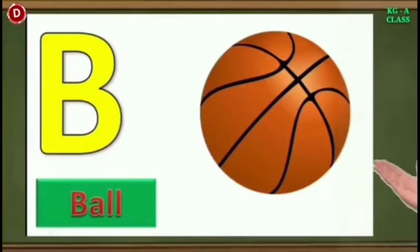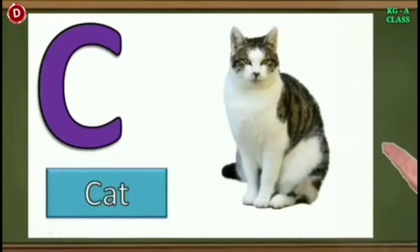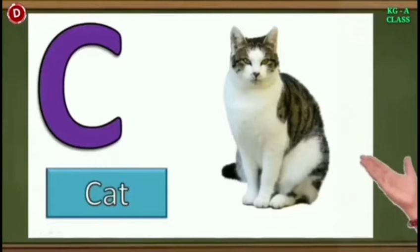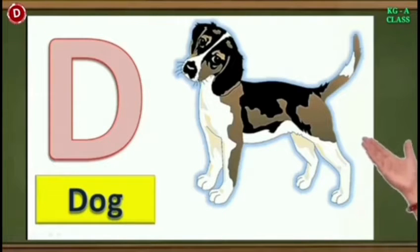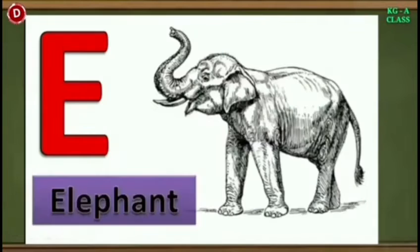Now comes B. B for ball. Now comes C. C for cat. The next letter is D. Look here, children. This is capital D and D for dog. Now comes E, children. Look here. This is E. E for elephant.